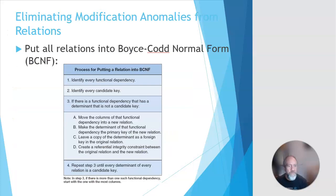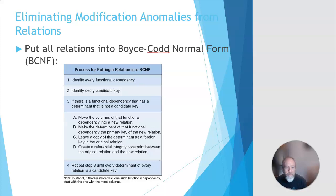So what is the process called? We call it normalization. How do we do this? We talked about functional dependencies — you identify them. Go into that table and identify the functional dependencies, then identify the candidate keys. If there's a functional dependency whose determinant is not a candidate key, you move it to its own table. You take the columns of that functional dependency and put them into a new table, make the determinant the primary key of the new table, and leave a copy of that determinant as a foreign key in the original table with a referential integrity constraint between them.